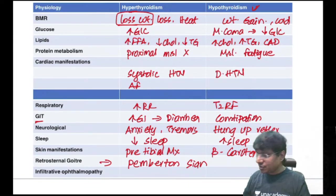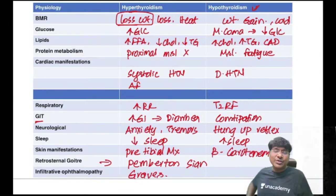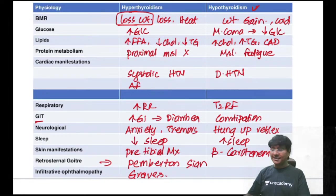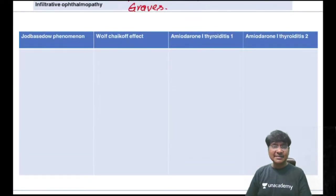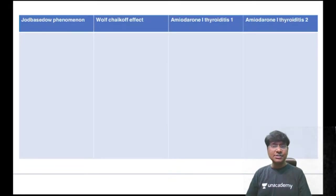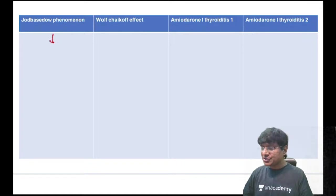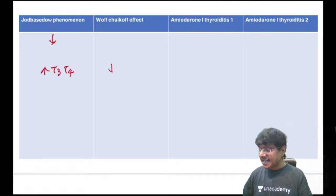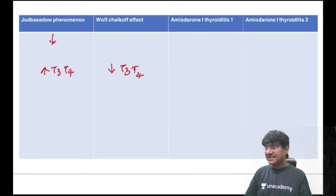Graves' ophthalmopathy (infiltrative ophthalmopathy) causes proptosis. Jod-Basedow effect is iodine-induced hyperthyroidism. Wolff-Chaikoff effect is iodine-induced hypothyroidism. Amiodarone-induced thyroiditis type 1 causes hyperthyroidism (similar to Jod-Basedow); type 2 initially causes hyperthyroidism followed by hypothyroidism (due to lysosomal destruction).